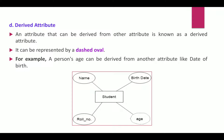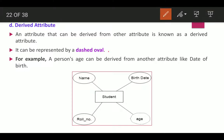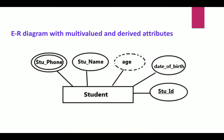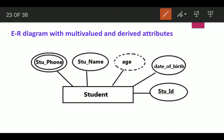A derived attribute is one that can be derived from another attribute, represented as a dashed oval. For example, a person's age can be derived from their date of birth — you calculate the age from the date of birth. So age is a derived attribute. In an ER diagram, a student entity may thus have a key attribute, composite attribute, multi-valued attribute, and derived attribute.